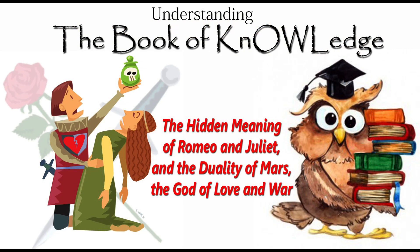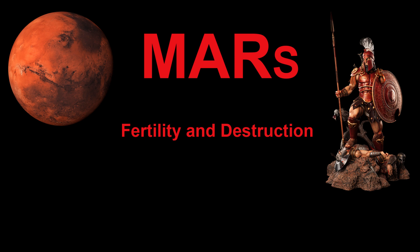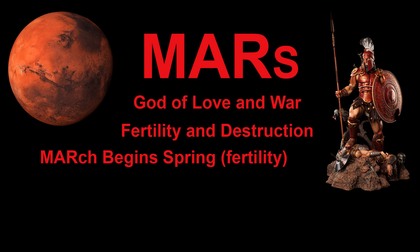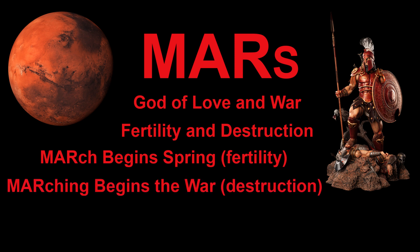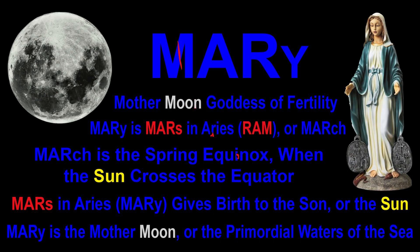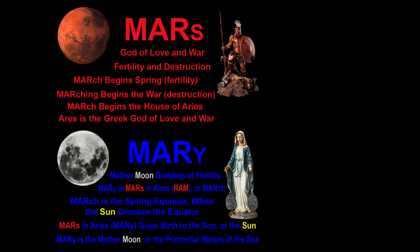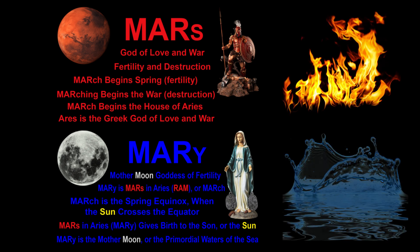The word stem 'mar' holds the duality of fertility and destruction. This is why Mars is the god of love and war, and the month that starts the season of spring, or fertility, is March. The word stem 'mar' can represent Mars, but it can also represent water — like 'marine.' We've talked before about how the symbols for Mars are the sword, the letter L, and fire. With this in mind, we also see the duality of fire and water in the word stem 'mar.'